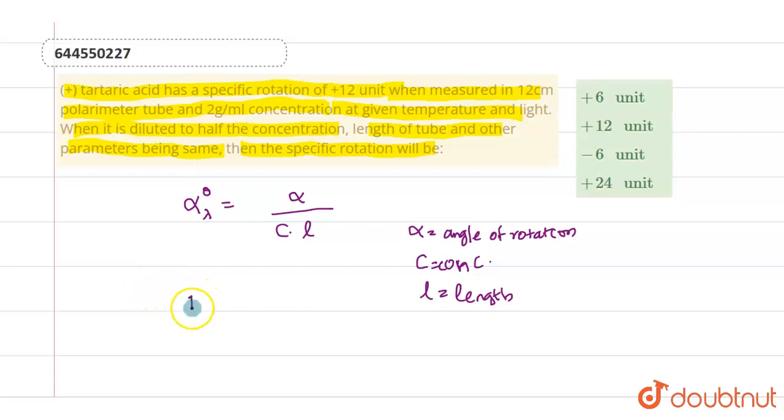The specific rotation is 12 when we don't know the value of alpha, when concentration is 2 gram per ml and length is 12 centimeter.